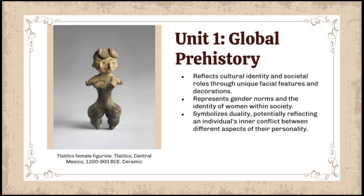For unit one, we have global prehistory and the Tlatilco female figurine. It has a portrayal of cultural identity for those people of the time with its unique facial features and decorations. They indicate specific identities within society such as social statuses or roles. As the figurine is female, we can see it as a representation of gender norms and how a woman would identify. It also speaks on the identity of an individual as the two faces can symbolize duality in a person, reflecting the inner conflict between different aspects of somebody's personality.